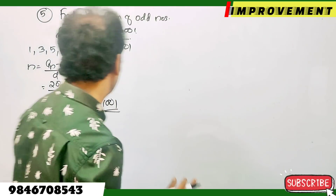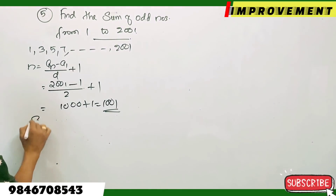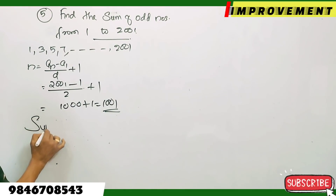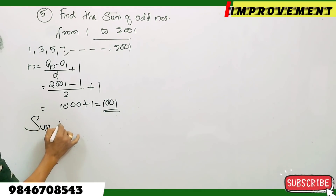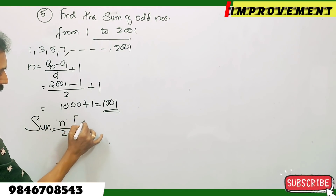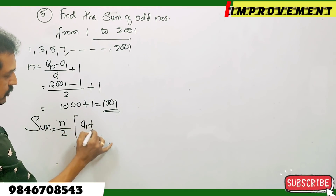Now we will find the sum using the formula. The sum equals 1001 divided by 2 times (first term plus last term).